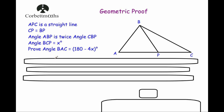Quite often the question will say give reasons for each step of your answer. So let's have a look at our first question. The first question says APC is a straight line — so this is a straight line.